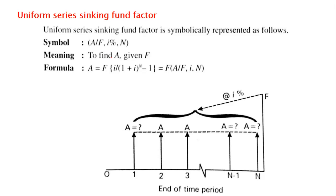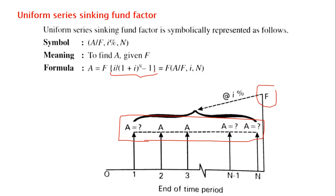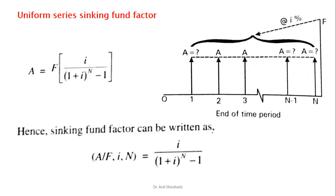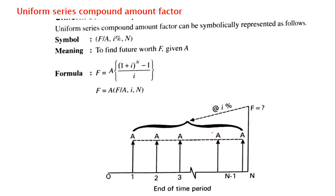What about the uniform series sinking fund factor? I have an idea about the future amount I want, and I want to know what is the uniform amount A I have to invest now. This can be calculated using the equation F into I by (1 plus I) raise to N minus 1, where F is converted into constant A values. For the uniform series compound amount factor, it is the reverse: A is known, and I want to know what is the future amount F I am getting.